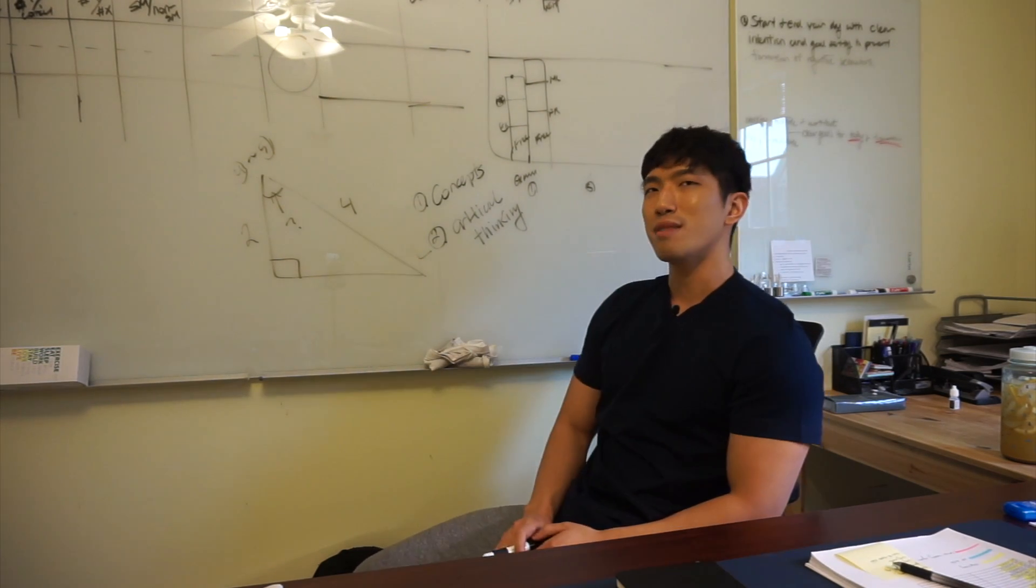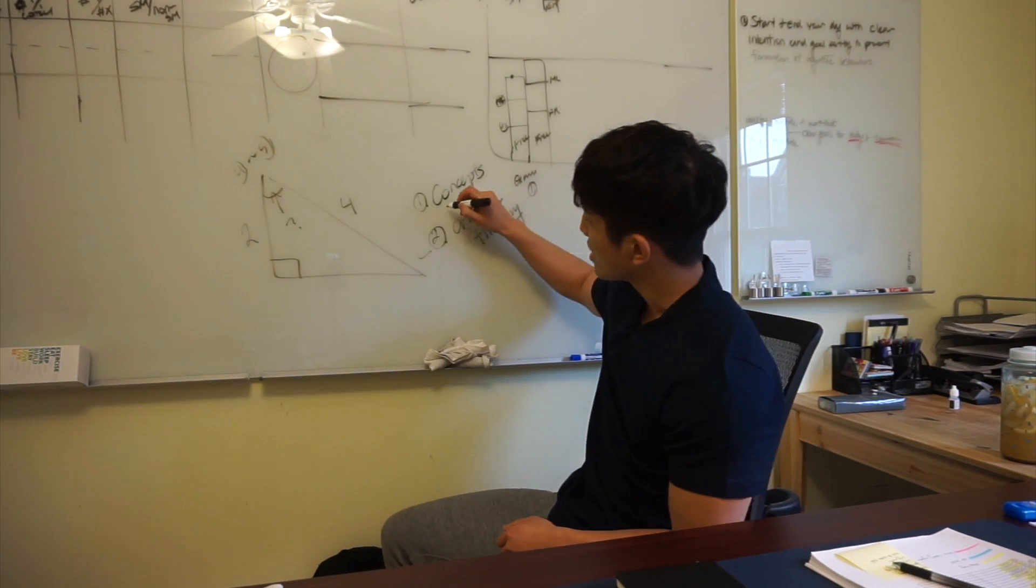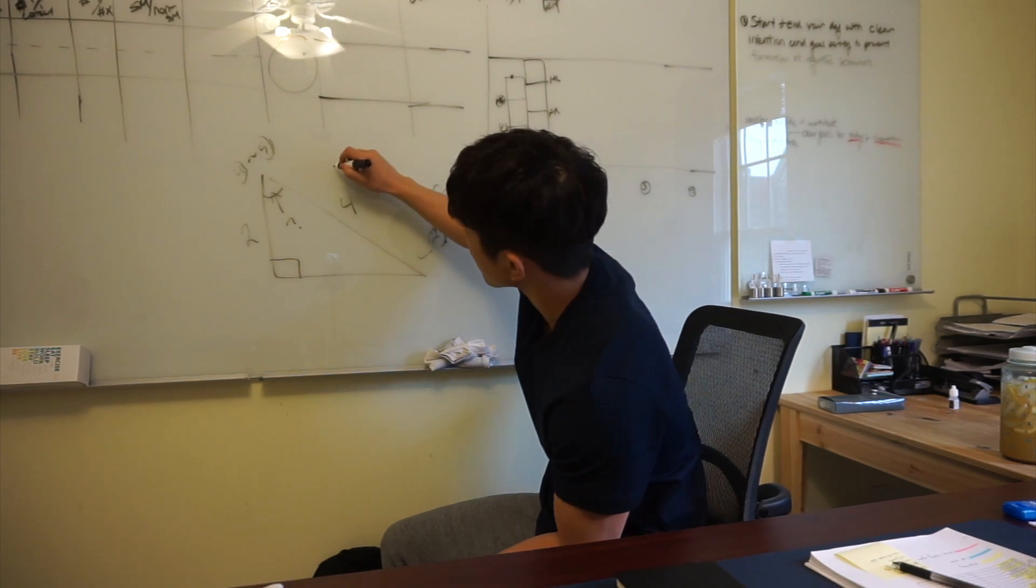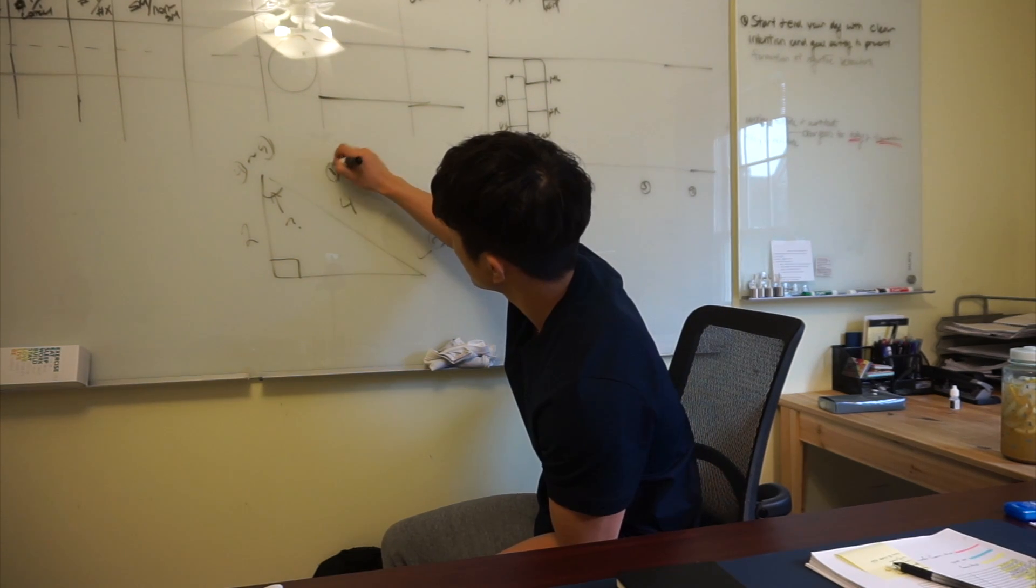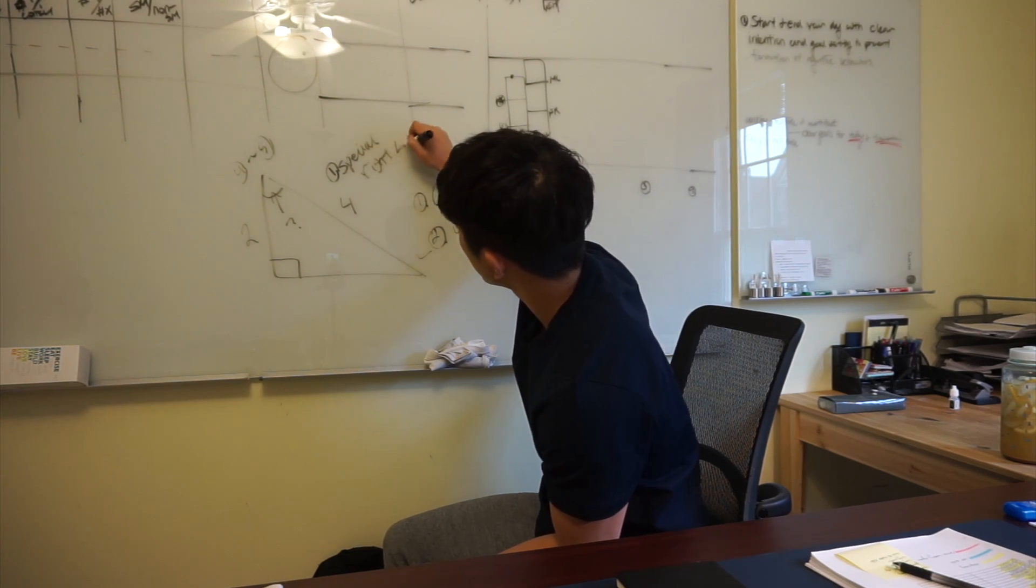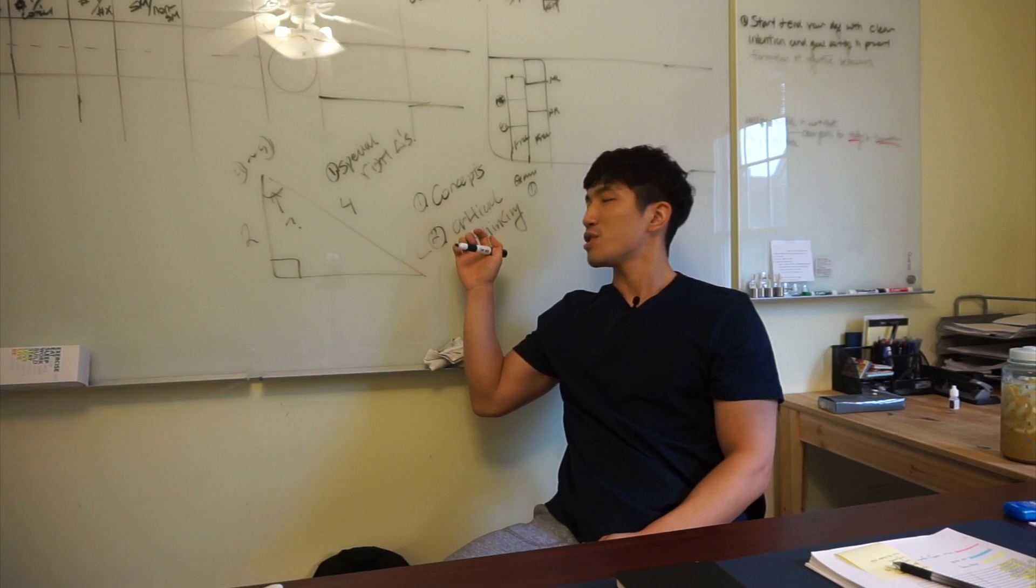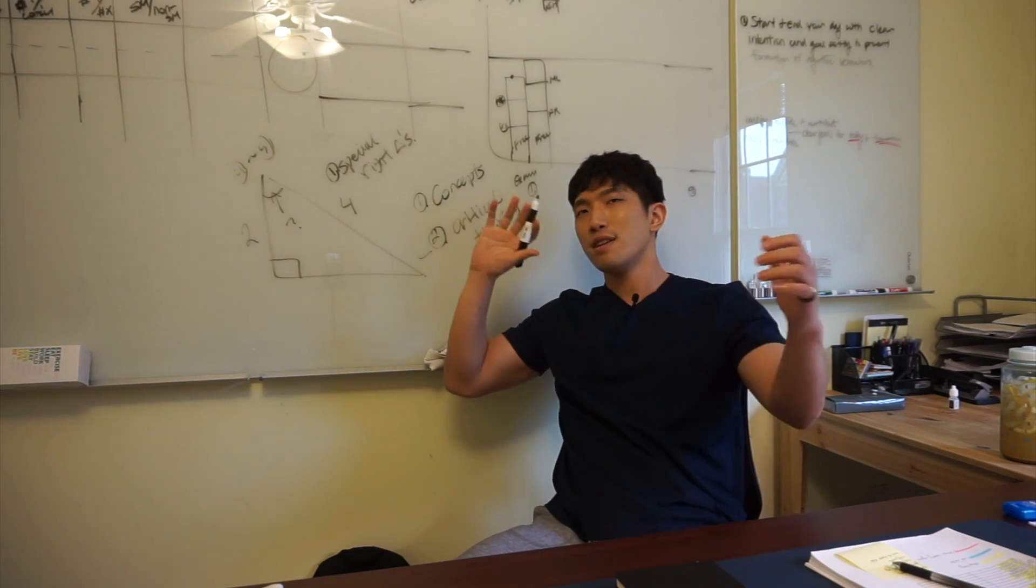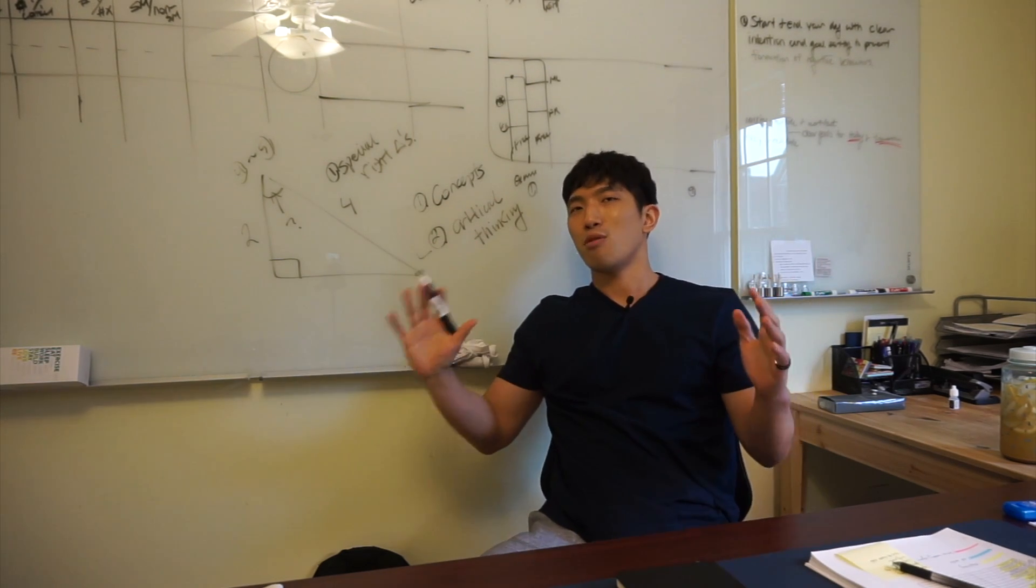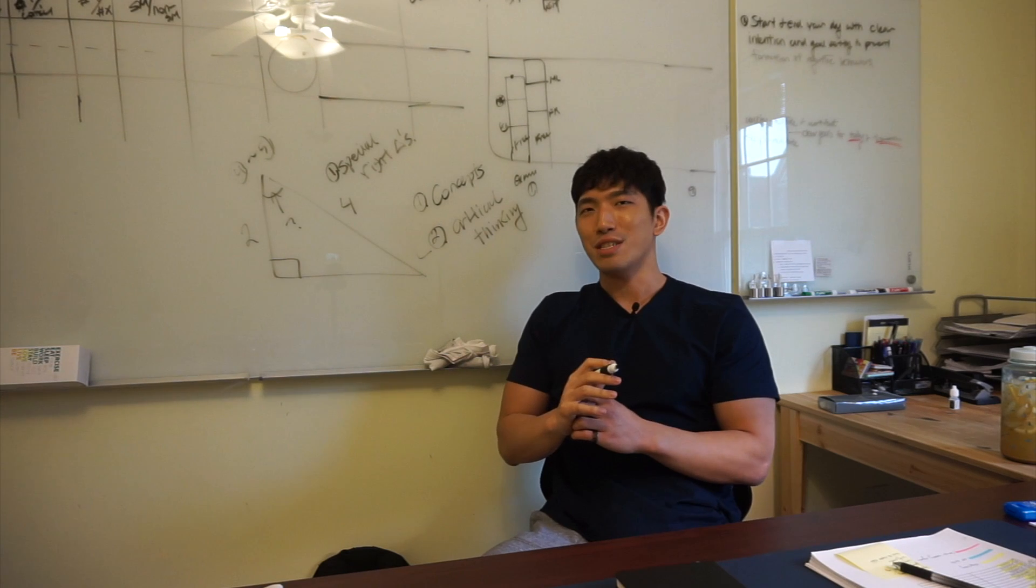So, first of all, this concept is going to be special right triangles. And you're going to need to use some critical thinking to kind of twist this concept around and apply to this question, and that's going to get you toward the answer.